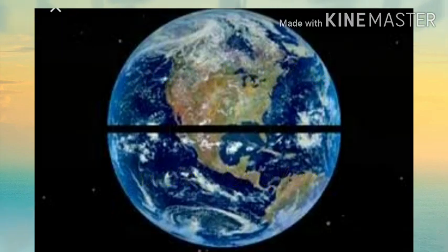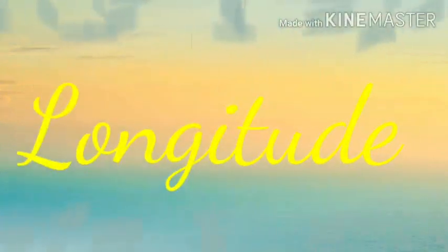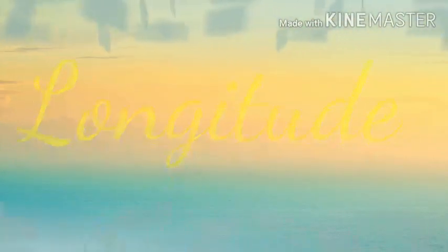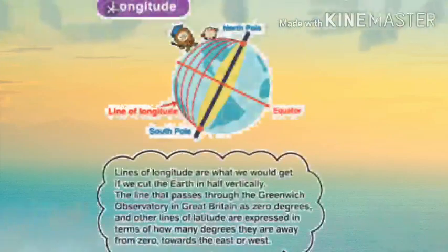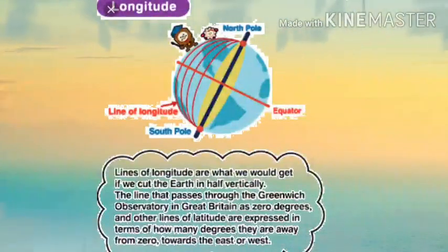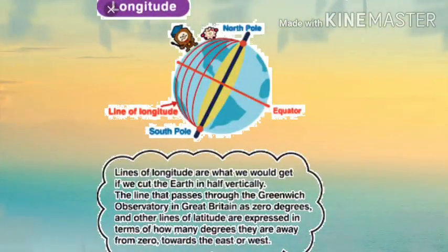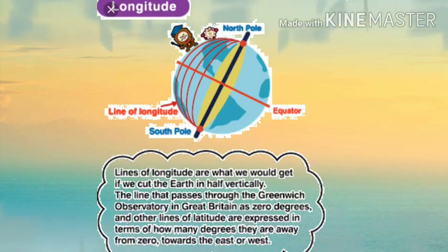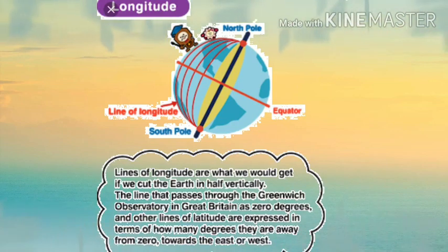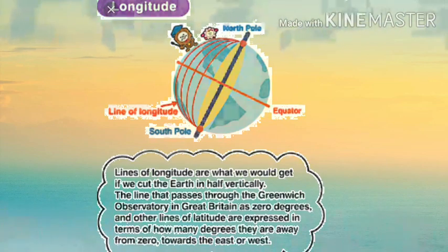Now let's learn about longitudes. The imaginary vertical and parallel lines that join the north and the south poles are called the lines of longitudes or meridians.